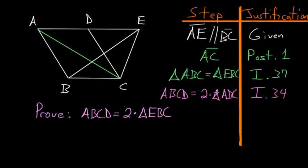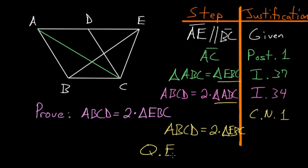But we already know that the triangle ABC is equal to the triangle EBC. So using common notion number one, we can essentially just substitute this for this triangle since they're equal to each other. So in other words, we have that the parallelogram ABCD is equal to twice the triangle EBC. But this is exactly what we're trying to prove. So we can end with QED.